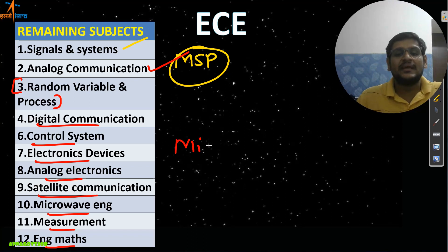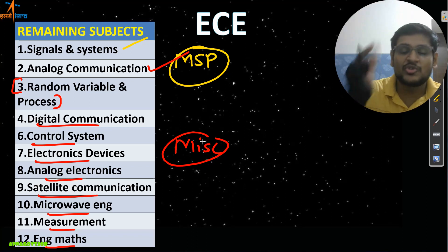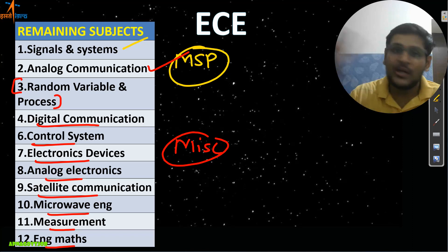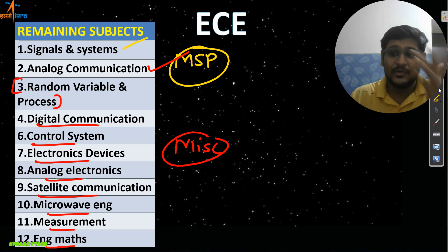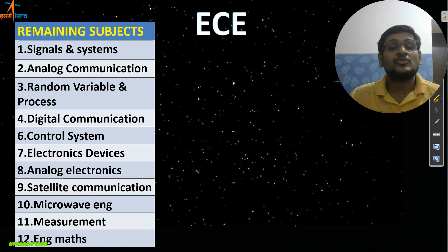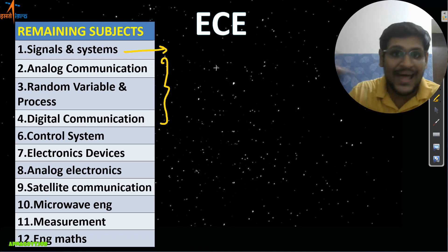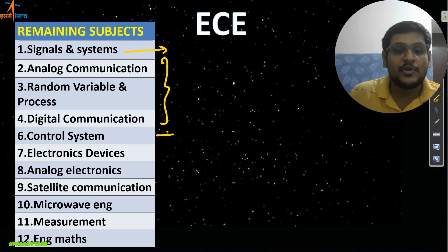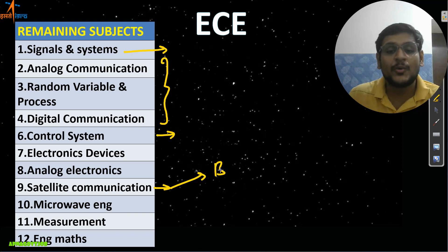Some miscellaneous questions will be there but no need to prepare separately for those — our target is selection. For new students: Phase One subjects are crucial. Prioritize Signals and Systems, then Analog Communication, Data Communication, and Control Systems in that order. For repeaters, I expect you to cover maximum things since you are not studying for the first time.